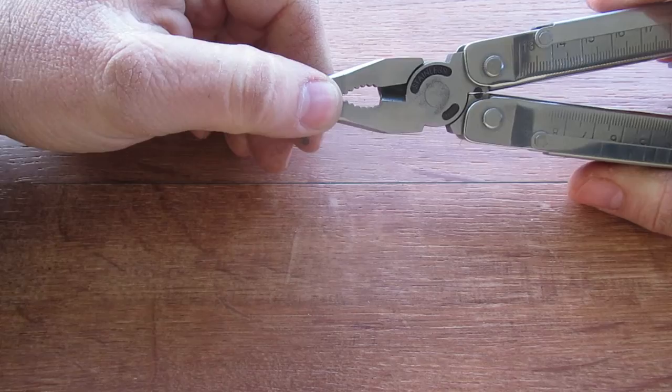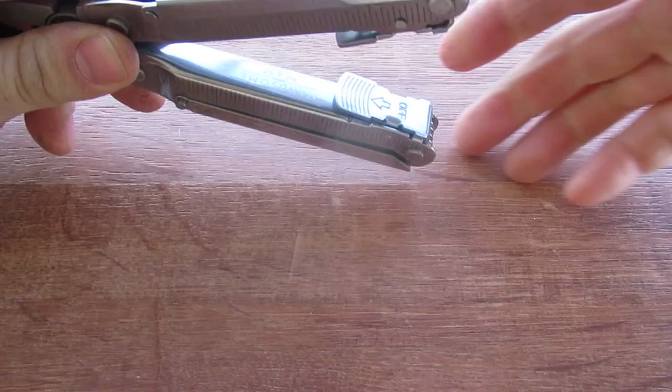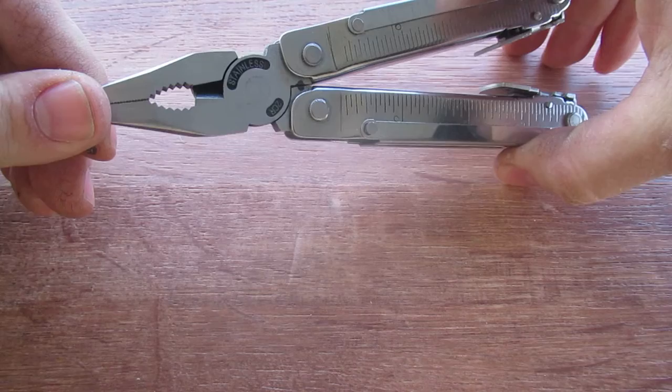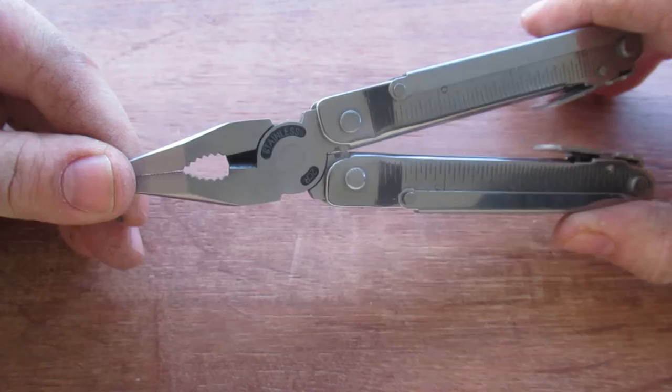And then obviously it does have locks on it, which some of even Leathermans like the Bond and so forth do not. Now having said that, there's no comparison to a Gerber or Leatherman. This is just Chinese Dollar Tree, basically product.